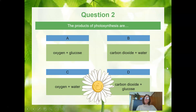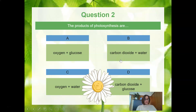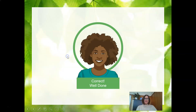The products of photosynthesis are — what do we get from photosynthesis? Is it A, oxygen and glucose; B, carbon dioxide and water; C, oxygen and water; or D, carbon dioxide and glucose? The answer is A — oxygen and glucose. Those are the products of photosynthesis.